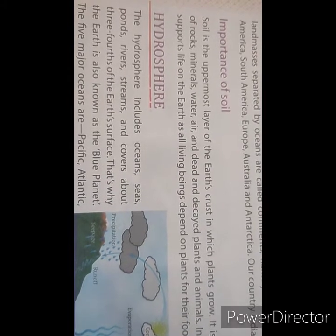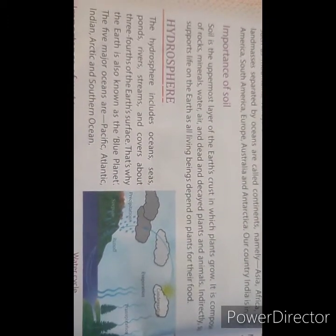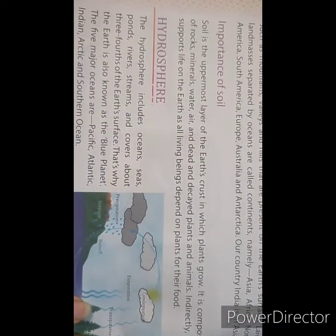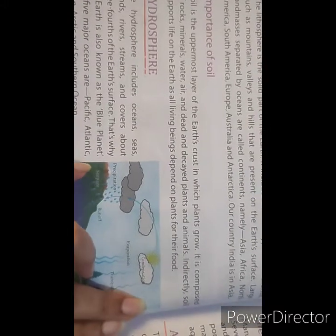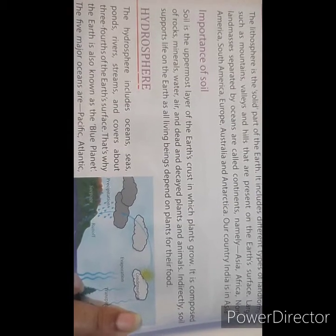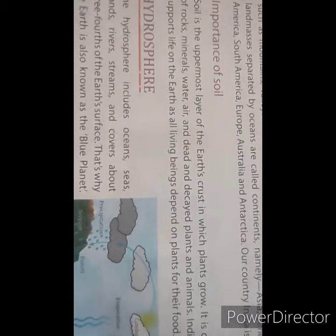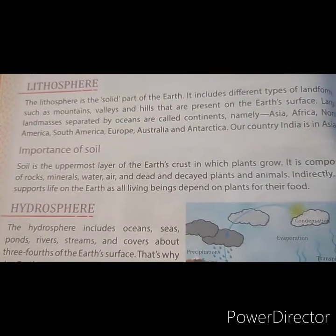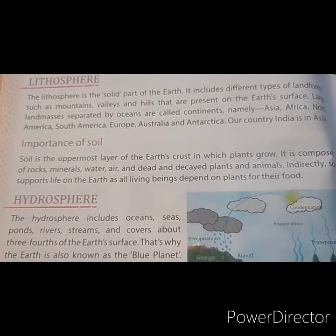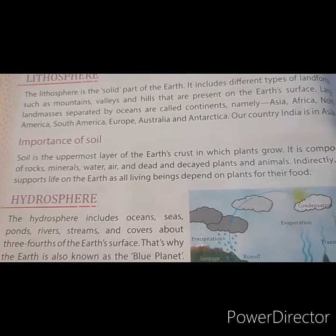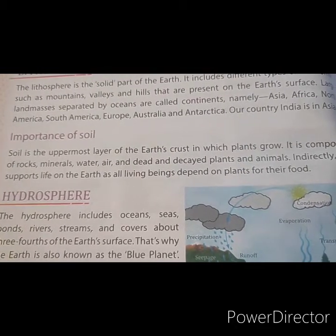Now, importance of soil. Soil is the uppermost layer of the earth's crust in which plants grow. It is composed of rocks, minerals, water, air, and dead and decayed plants and animals. We get our food from plants, and we grow plants in the soil. Can we plant plants without soil? Of course not. For planting a plant, we need soil.